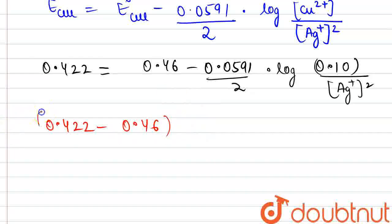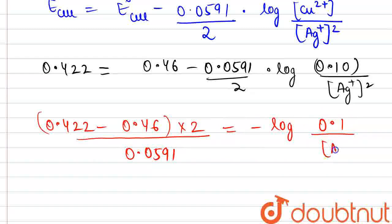We will solve this portion after that multiplied by 2 divided by 0.0591 is equal to minus log of 0.1 divided by concentration of Ag+ ions. So, on solving this, the concentration of silver ions finally comes out to be equal to 7.1 × 10⁻² molar, which is the answer. Thank you!